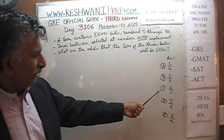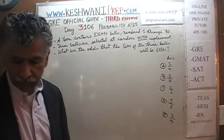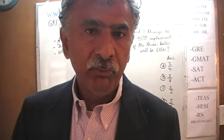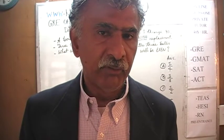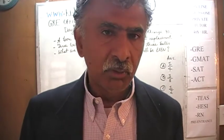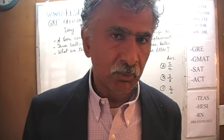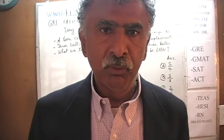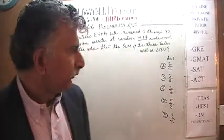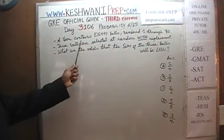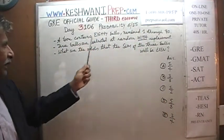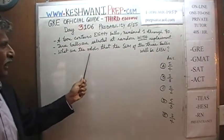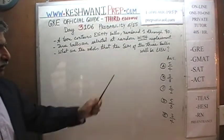Here are the answer choices: 1/4, 3/8, 1/2, 5/8, and 3/4. I'll give you a few seconds to pause the video and solve the problem yourself first. Once you have done so, compare your work against what we will do together. A box contains 80 bowls numbered 1 through 80; 3 bowls are selected at random with replacement. What are the odds that their sum is even?